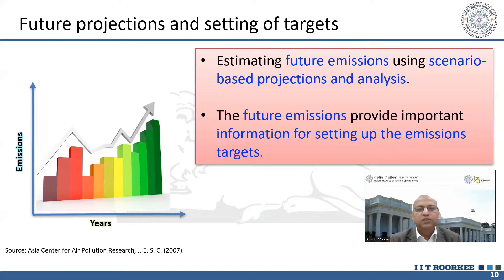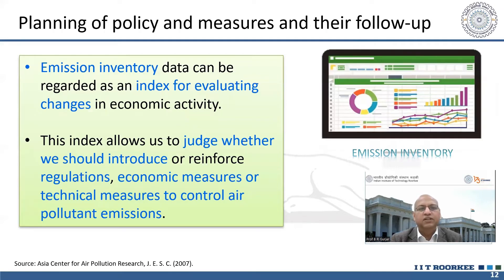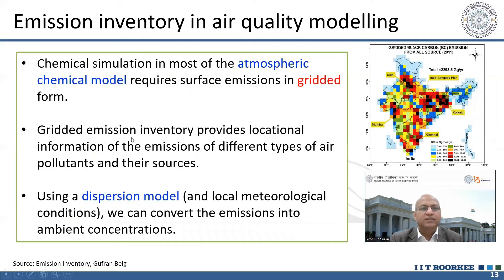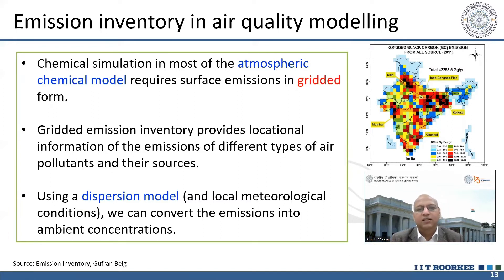If you want to implement control, prevention, or emission reduction measures, emission inventory always tells you the effect of any planning policy. For modeling, you want to use emissions for chemical simulation — for example, to calculate secondary aerosols or secondary production of pollutants. You need primary pollutant emissions in grid form, which can be developed using tools like GIS. Then you can use models such as WRF-Chem or others for estimating secondary air pollutants.